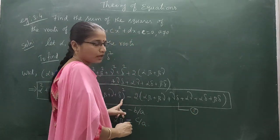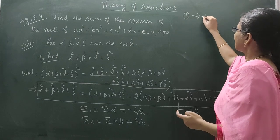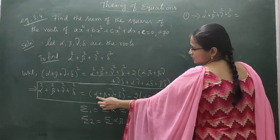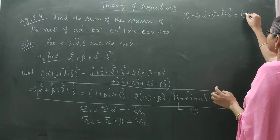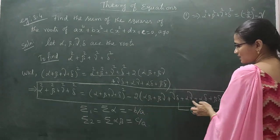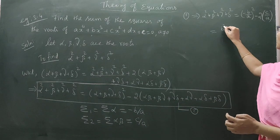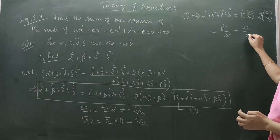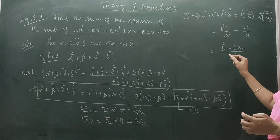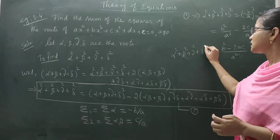Now substituting into our formula: alpha² + beta² + gamma² + delta² = (Σ₁)² - 2·Σ₂ = (-B/A)² - 2·(C/A) = B²/A² - 2C/A. Taking A² as the common denominator, this simplifies to (B² - 2AC) / A².